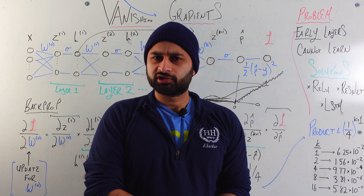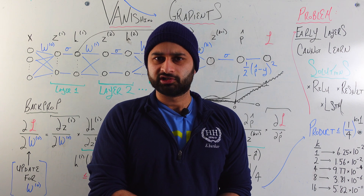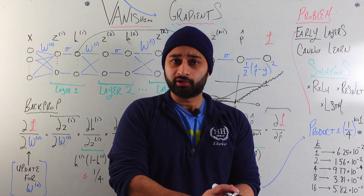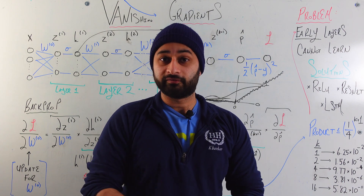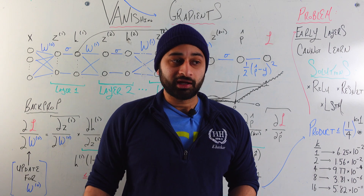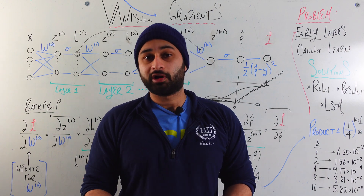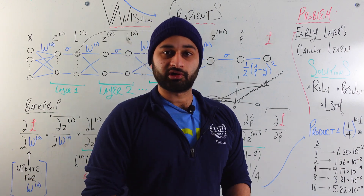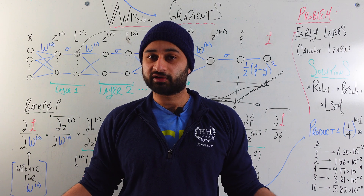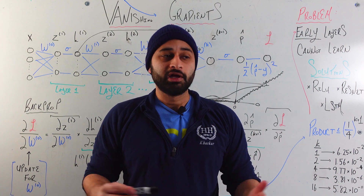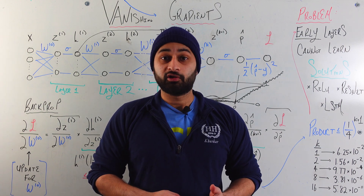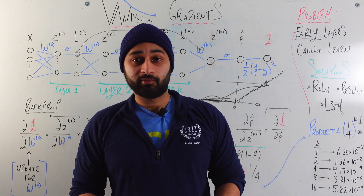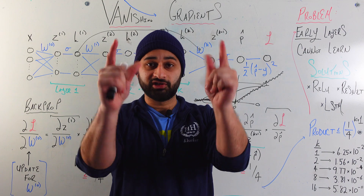That's the vanishing gradient problem. I think it's very important to understand because it is one of the big issues with neural networks that people have had to find ways to deal with. If you're not careful, you can run into it yourself when implementing a neural network. If you liked this video, please leave a like and subscribe, and I'll see you next time.